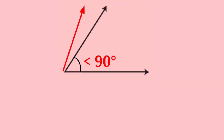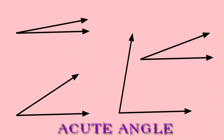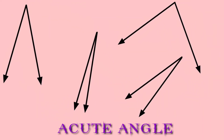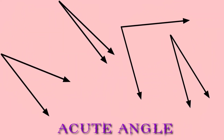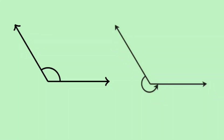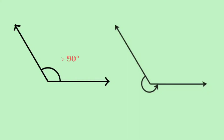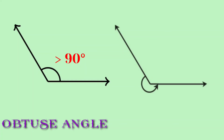Here is a figure showing an angle less than 90 degrees — that is an acute angle. And after examining the next figure carefully, we can say that this angle is an obtuse angle.